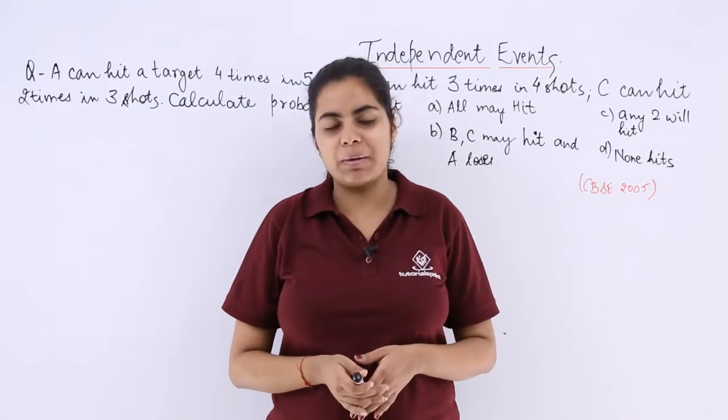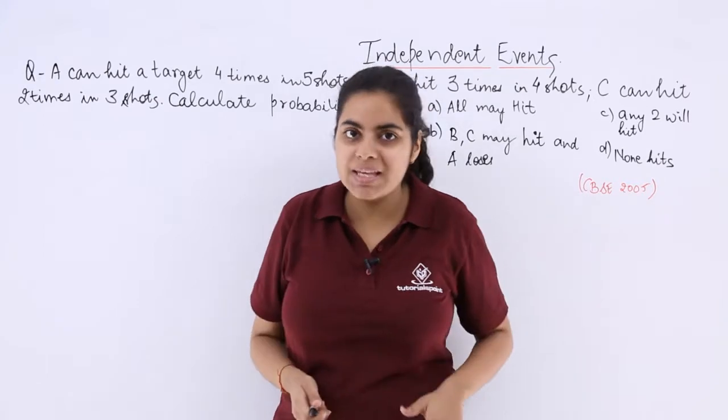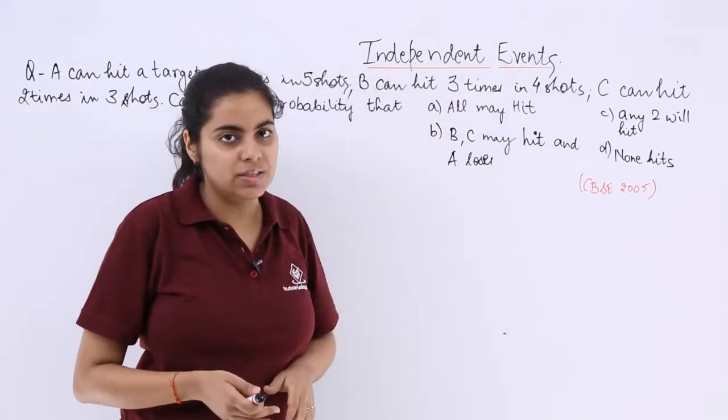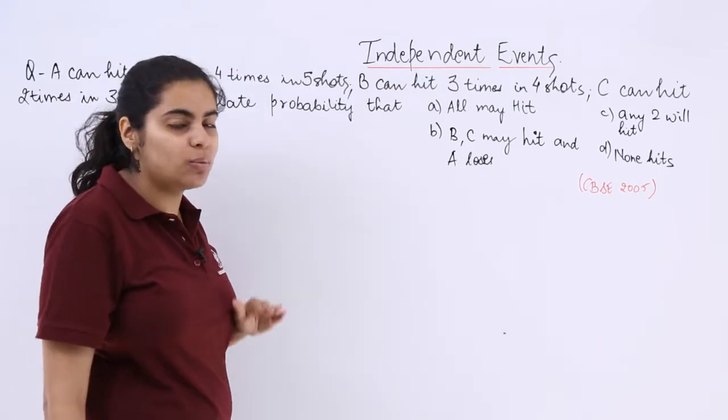So now let's see a previous examination question asked in the CBSE examination 2005 based on the topic of independent events. So let's read the question. It has four parts. We'll solve them all one by one.